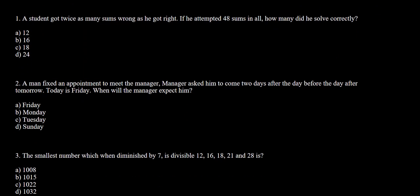Question number one says: a student bought twice as many wrong answers as he got right. He is giving a test and has given wrong answers to twice the number of questions he answered correctly. If he attempted 48 sums in all, how many did he solve correctly?